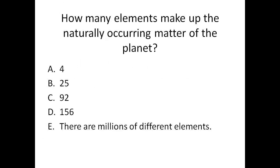How many elements make up the naturally occurring matter of the planet? Is it four, 25, 92, or are there millions of different elements?